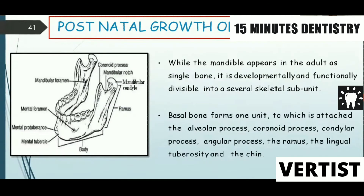With this background, we discuss postnatal growth of the mandible — another common long question. When answering, draw a diagram of the mandible, label its parts (body, ramus, condyle, and coronary process), and mention three to four points on the growth of each. Although the mandible appears as a single bone, it is functionally divisible into skeletal subunits: the basal bone, to which are attached the angular process, coronary process, condylar process, ramus, lingual tuberosity, and the chin.